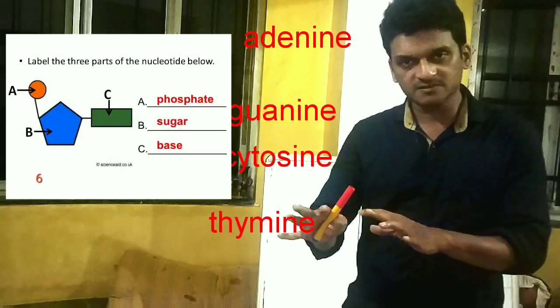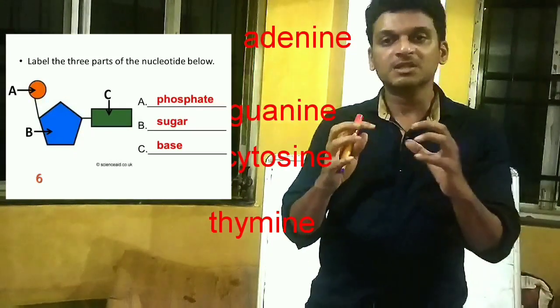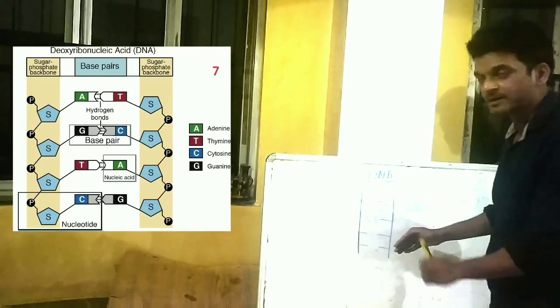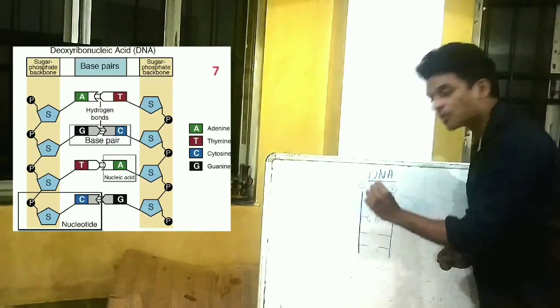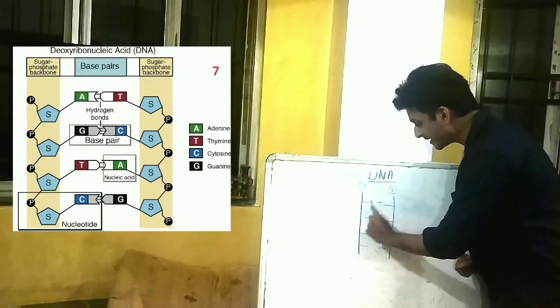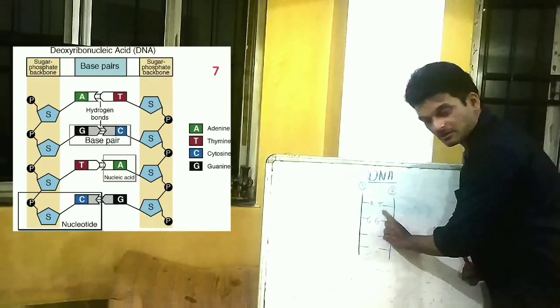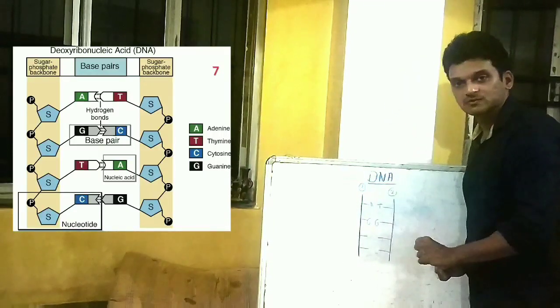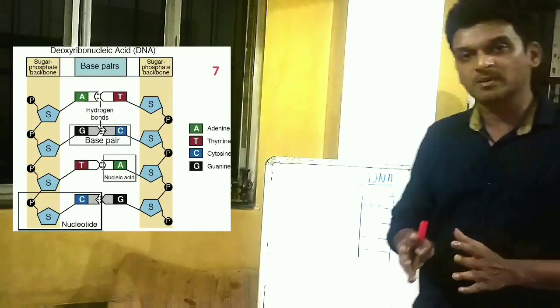Any one of these four nitrogen bases, one pentose sugar, and one phosphate molecule combine with each other to make a single nucleotide. Such nucleotides combine with each other, one after another, to make one strand of DNA. Similarly, the other strand of DNA is also made up of a series of nucleotides, just as shown in the figure. Here we must remember that in the two strands, the nitrogen bases always face each other. Adenine on one strand will always connect to thymine on the other strand, and guanine is complementary to cytosine. This is called a complementary base pairing.